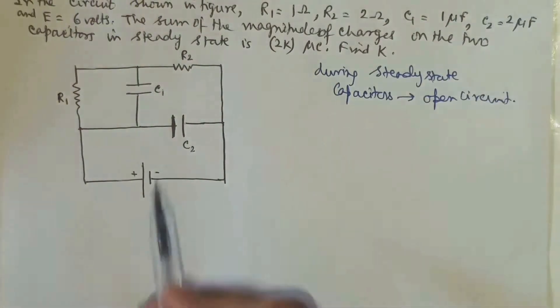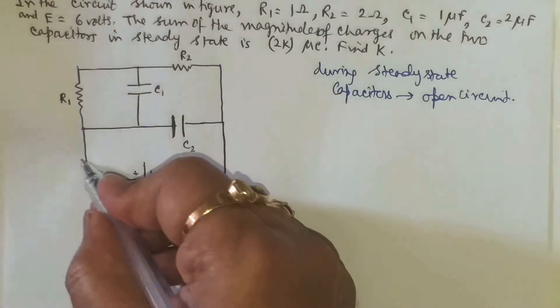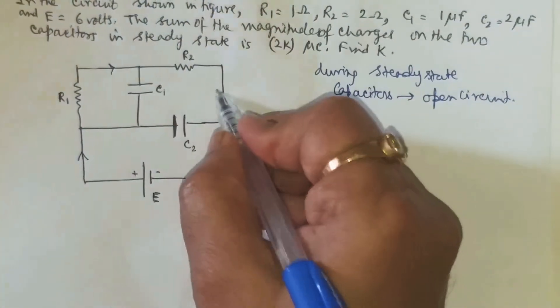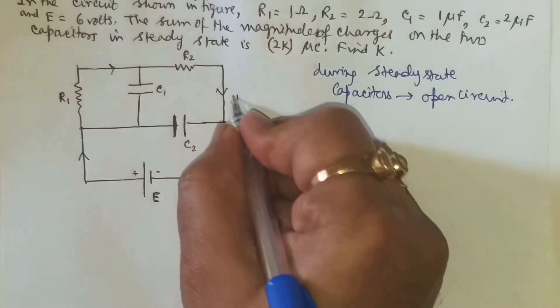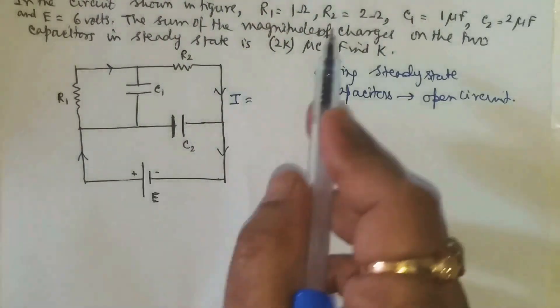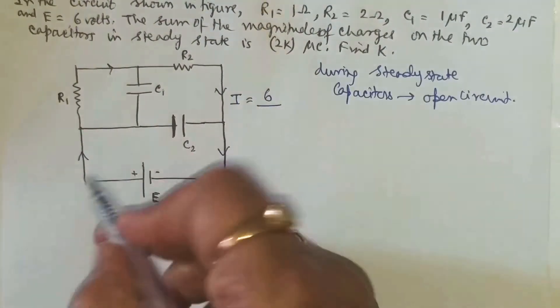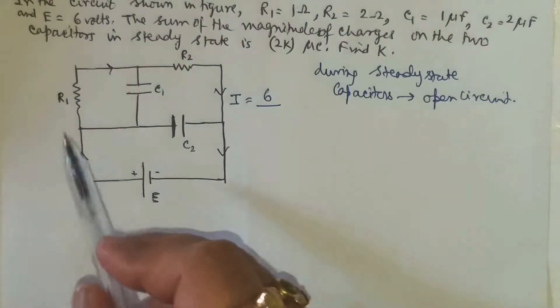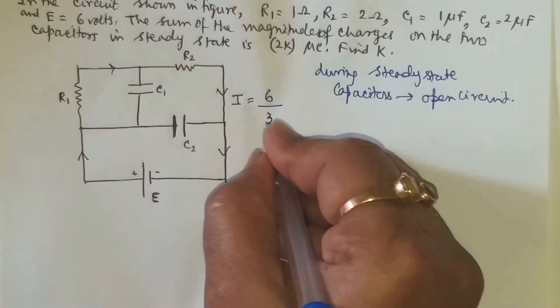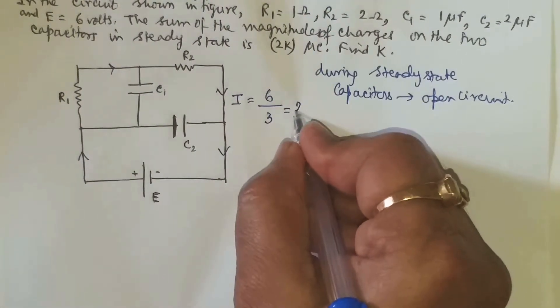Therefore you can assume that these are not there. If these are not there then there will be a uniform current through this. The current will be the EMF which is 6 divided by the overall resistance. The resistance is 1 plus 2, that is 3, and this current is equal to 2 ampere.